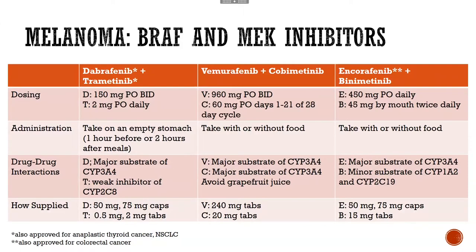To be quite honest, we do not use vemurafenib/cobimetinib much. We either use dabrafenib/trametinib or encorafenib/binimetinib, based on toxicity profiles and tolerability. Additionally, in melanoma, if it's going to be used in an adjuvant setting, dabrafenib and trametinib is the only combination indicated for that. I've created charts in this presentation for you to reference later with the different capsule and tablet sizes, which can help dictate dose reductions.